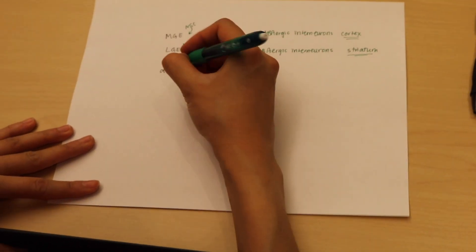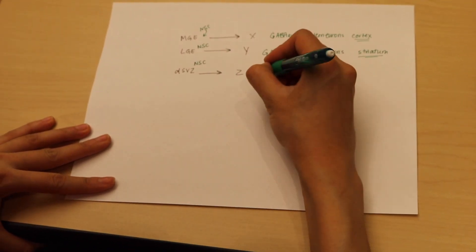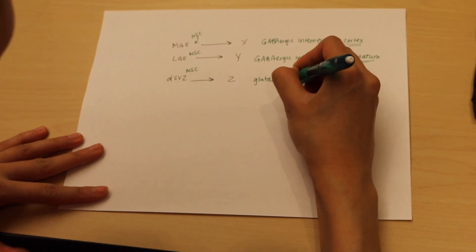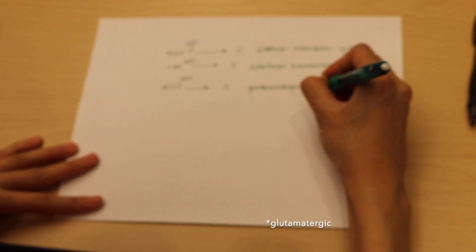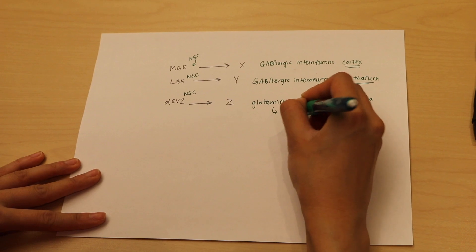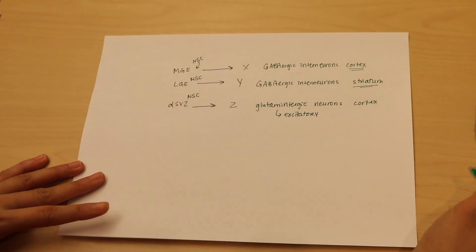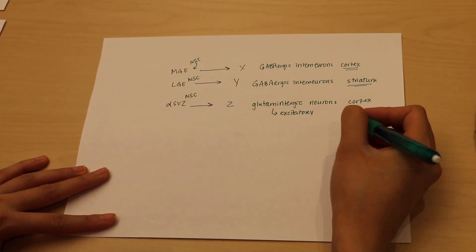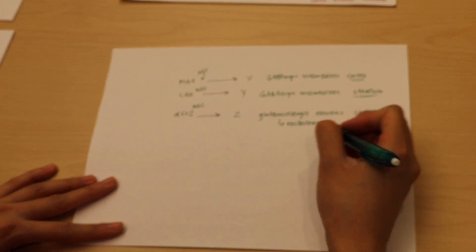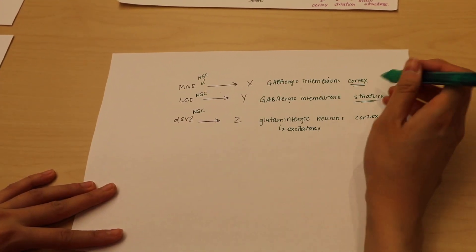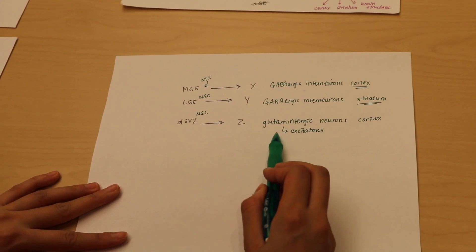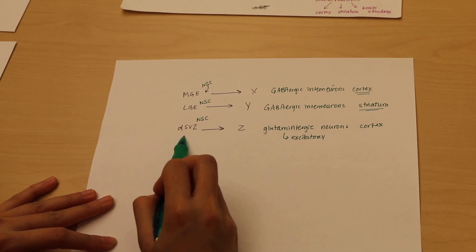And then in the dorsal subventricular zone, these neural stem cells will become glutaminergic neurons of the cortex. These are excitatory in nature. These are the neurons that we imagine when we think—when we say that we're thinking, these are the neurons that are firing and causing our networks to rewire. So essentially, we have two major populations of neurons within the cortex that are both inhibitory and excitatory, and they come from two different proliferative regions.